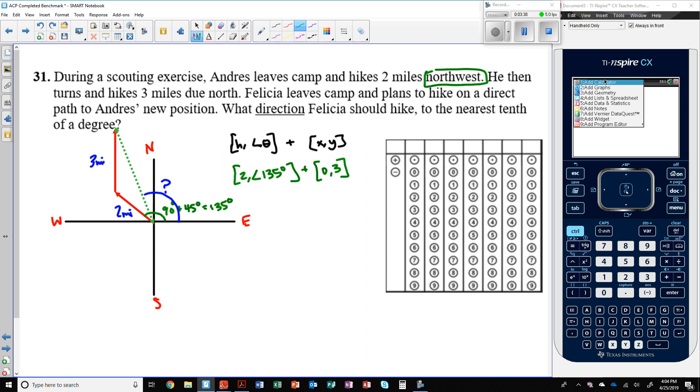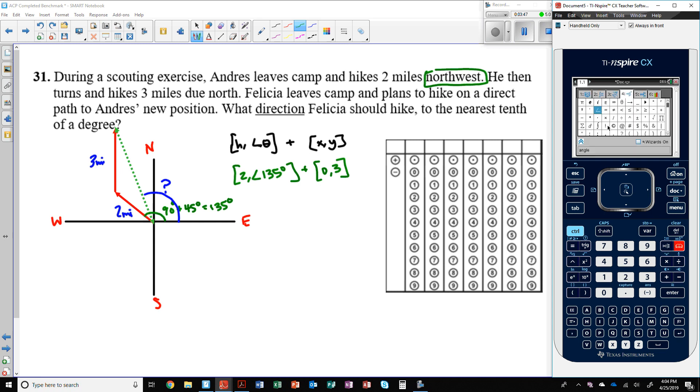So I'll go to my calculator. And I'm going to put control parentheses, get the bracket. If you go two miles on a heading of northwest, which means 135 degrees. Make sure you hit the angle symbol. Make sure you hit the degree symbol. Now I'm going to add that to zero, comma, three because he then hiked three miles due north. Press enter.